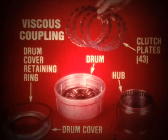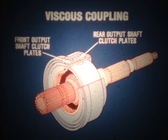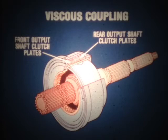In both the 119 and the 219, the viscous coupling is the key component. The coupling consists of a drum, a drum cover, a drum cover retaining ring, 43 individual clutch plates, and a hub. The coupling is filled with a silicone fluid that has the consistency of honey. The coupling is a sealed unit, serviced as an assembly only. Some of the clutch plates are splined to the front output shaft, while the others are splined to the rear output shaft. The front and rear plates are alternately stacked close together, all immersed in the silicone fluid.